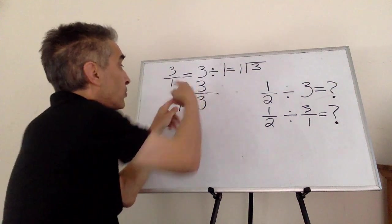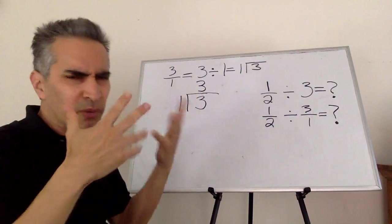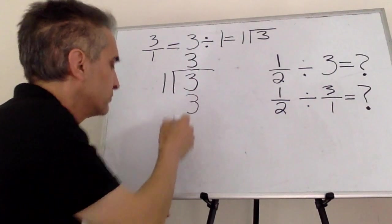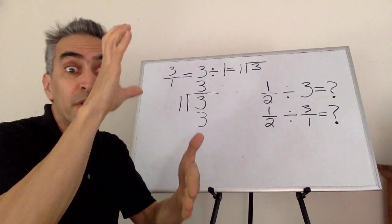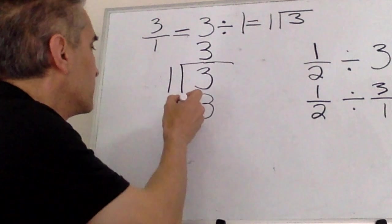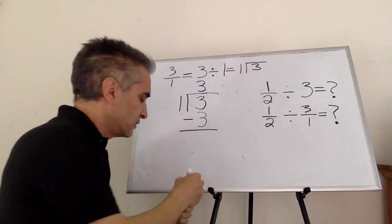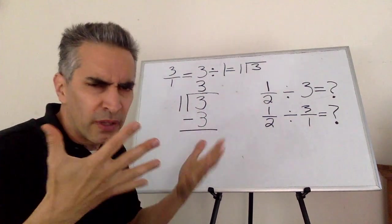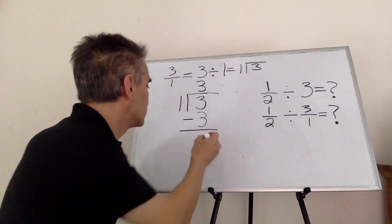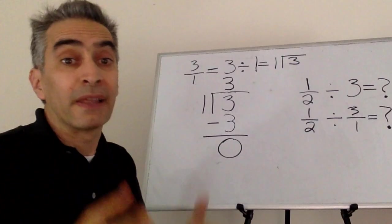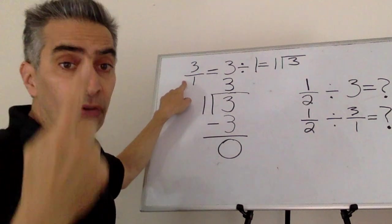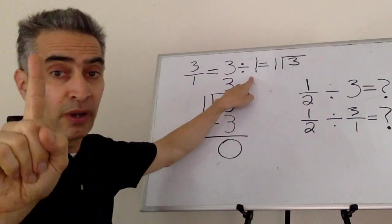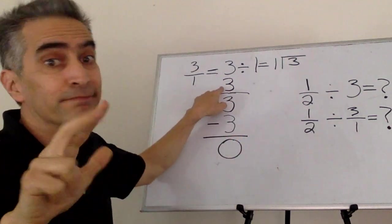Next, we multiply one times three and that equals three. Now what are we going to do? We're going to subtract. Three minus three equals zero. Now we know that three over one equals three divided by one which equals three.